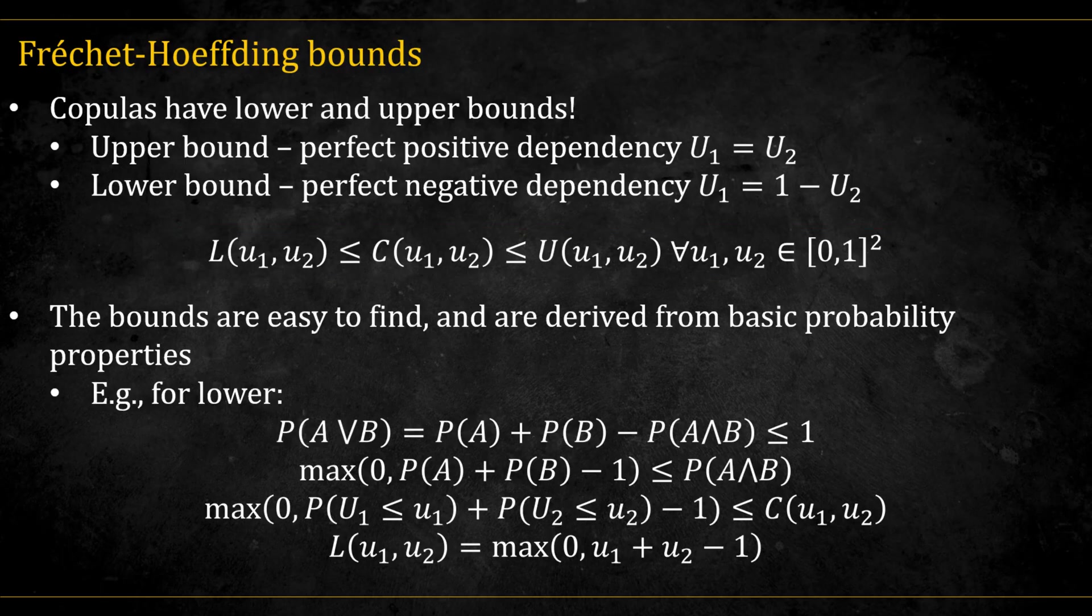The bounds are relatively easy to find. For the lower bound, we remember from basic probability this equation, and we also remember that it has to be lower than one. Rearranging and also remembering that probability has to be greater than zero, we get this.